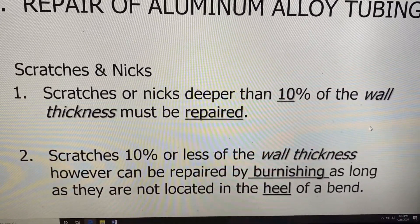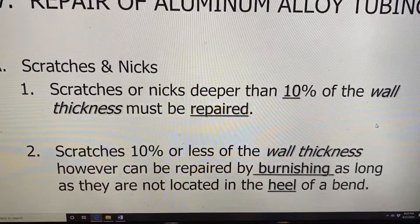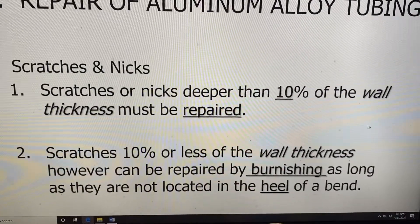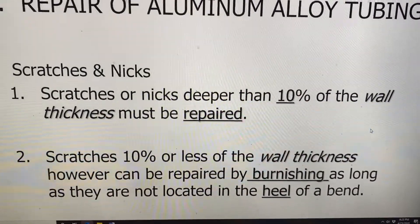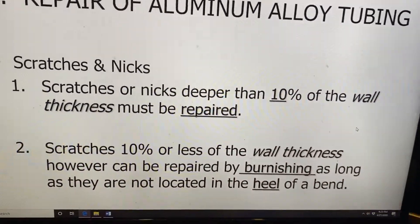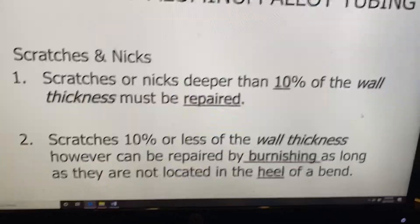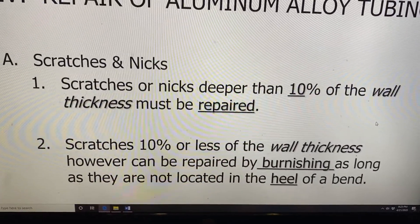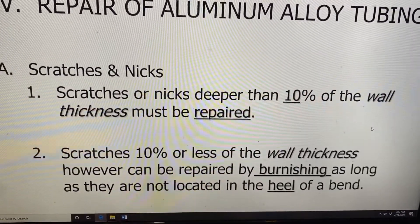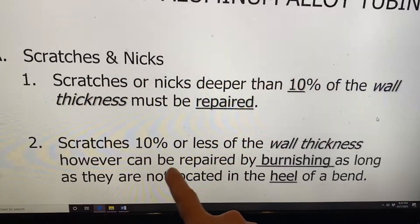So let's say we come across a rigid tube and it's got a scratch or a nick in it, and we're trying to decide, well, is this scratch or nick within allowable tolerances? The way to determine that is you have to know the wall thickness of it, because scratches or nicks deeper than 10% of the wall thickness must be repaired. Now, just because it's a scratch and it's less than 10% doesn't mean you can ignore it, because that's going to be a stress point — you still have to repair it.